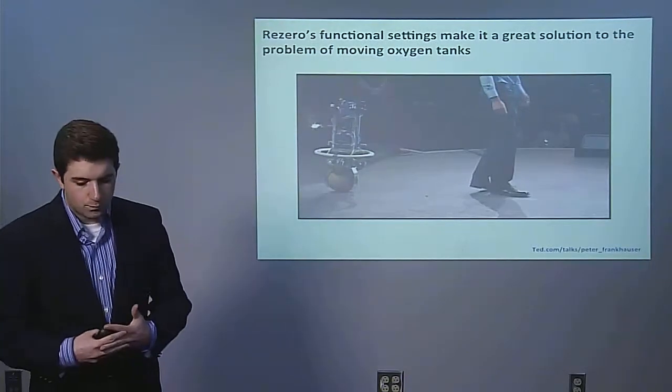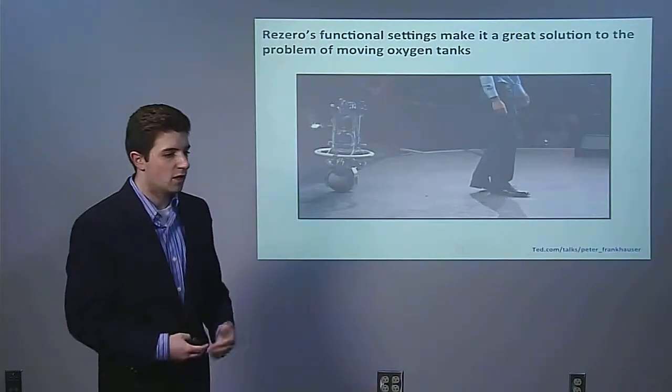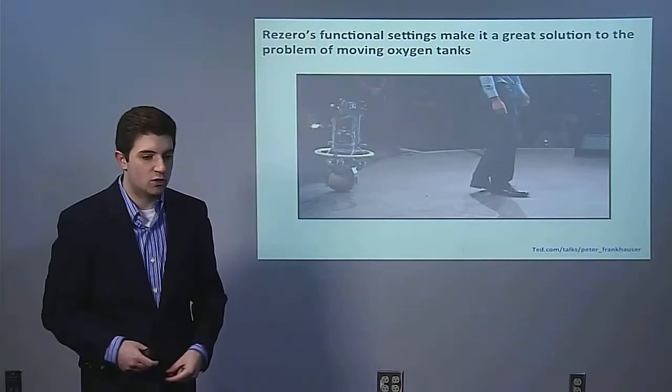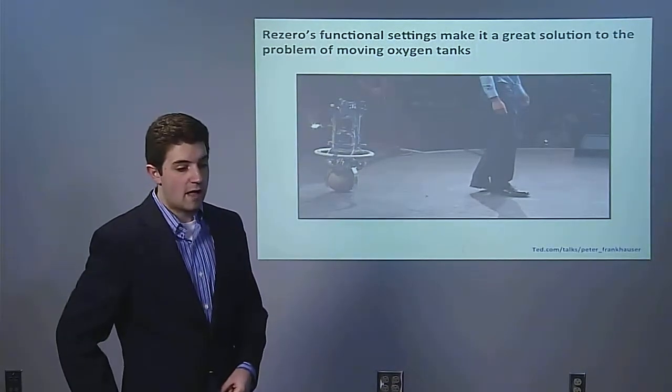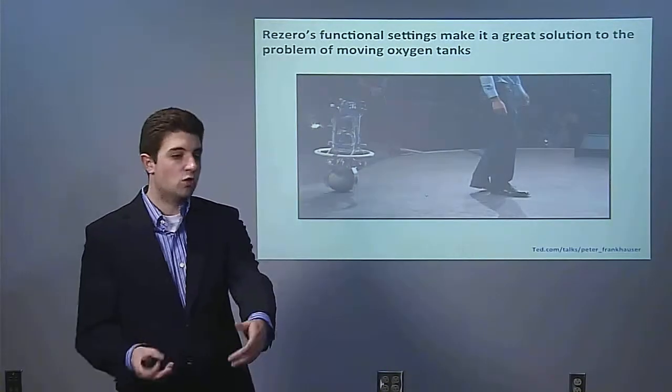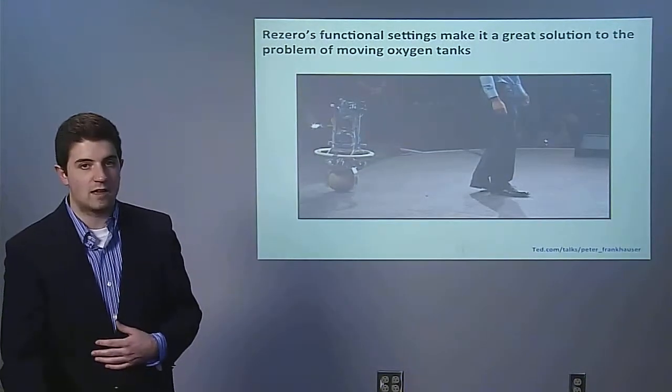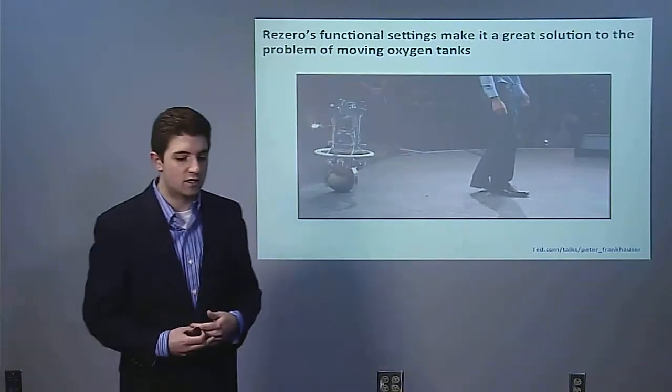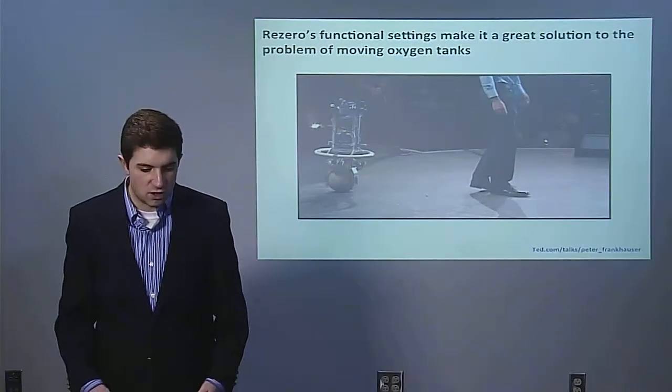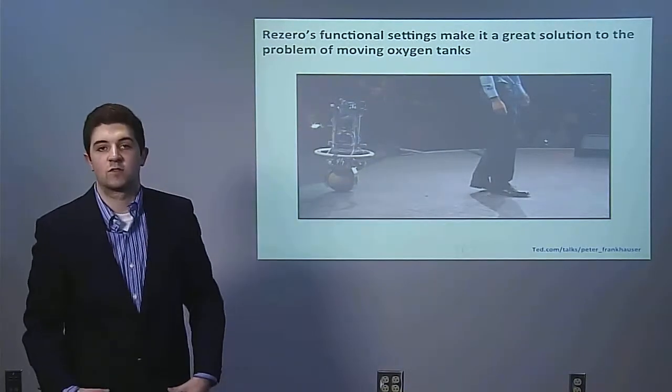We just saw two modes there - the follow-the-leader mode and the orbiting mode. The other two modes are the passive mode where I would be able to just pull Rezero and it would move as I push or pull it. The final mode is the retention mode where it tries to hold its position. If I push it, it will slide a few feet and then come back to its original position.